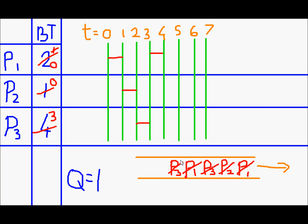Next is P3's turn. P3 will get hold of the CPU for one quantum of time. The remaining burst time of P3 will be 2 and it will join the queue at the back.